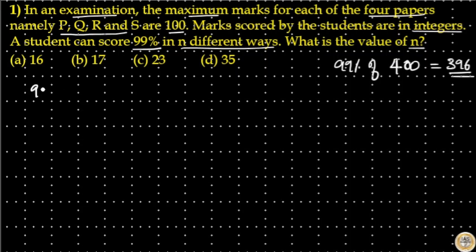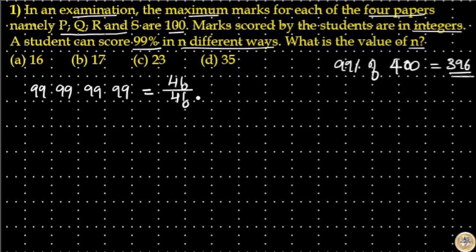If a student scored 99 in all four subjects, that means he scored a total of 396 marks. The number of ways a student can score 99 in four subjects is one way. There are four elements, so 4 factorial divided by 4 factorial — since 99 is repeated four times — equals 1.